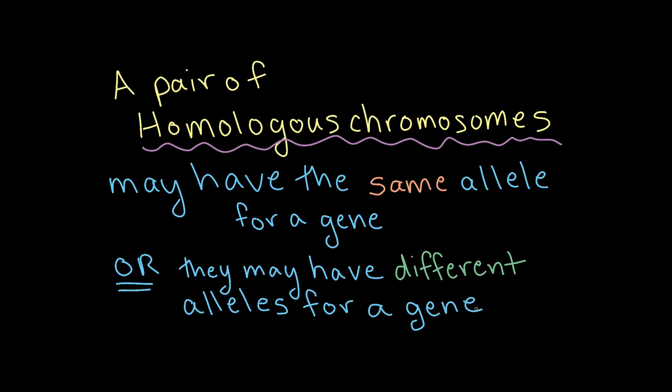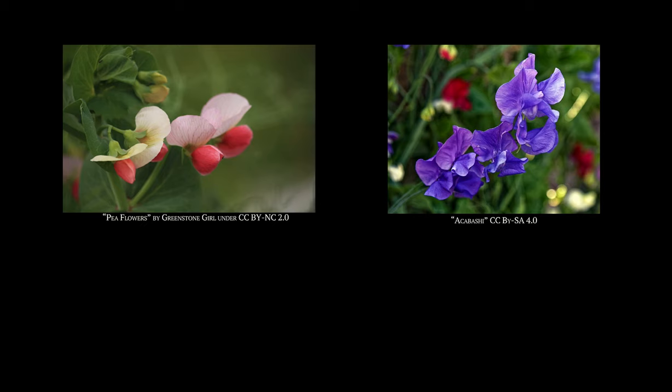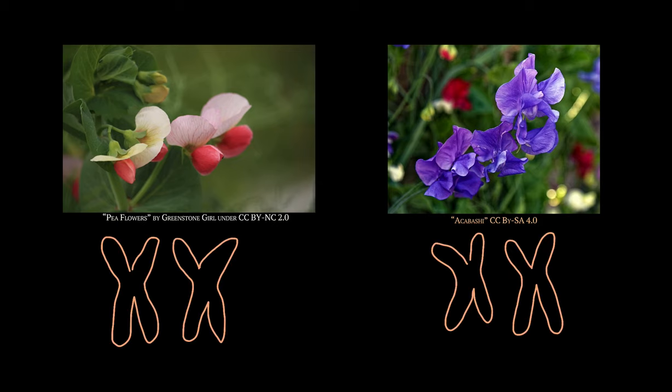To help us understand this, let's take a look at an illustrative example using pea plants. Pea plants can have pink or purple flowers. These colors are determined by two different variations, or alleles, of a single flower color gene. Pea plants have a copy of this flower color gene on each of two chromosomes in a homologous pair.